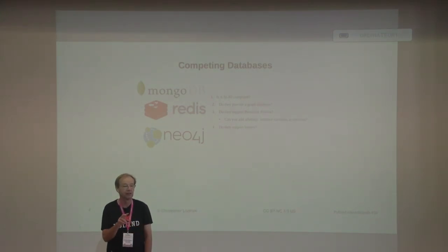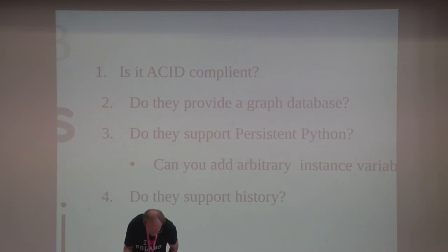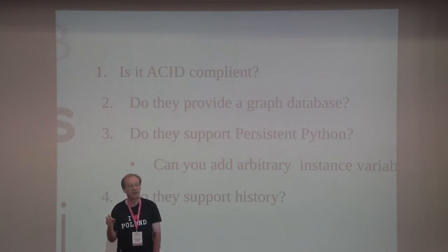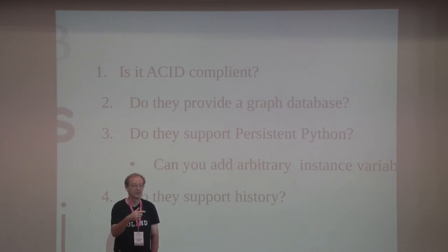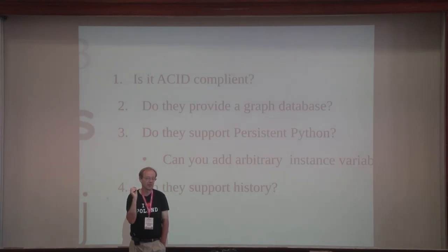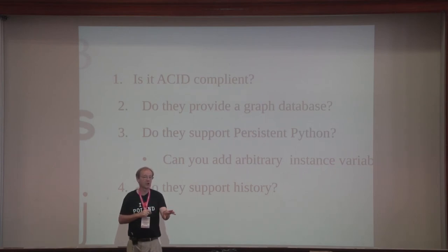That's a great question. One of the slides I missed is how ZeoDB compares to other databases. One of the problems with MongoDB is it doesn't do transactions properly — if you want to do a transaction across multiple documents, MongoDB will not do it correctly. When comparing databases, you have to ask: do they do transactions correctly? Do they represent a graph correctly? Do they support persistent Python? For example, Neo4j is in Java and statically bound, so you can't just add an instance variable to a Java object at runtime. And do they support history? I would say to somebody considering MongoDB: don't, because it doesn't do transactions correctly. Now, ZeoDB actually has a transaction manager that will do a transaction correctly across MongoDB and itself using a two-phase commit, but I can't guarantee MongoDB will do it correctly.